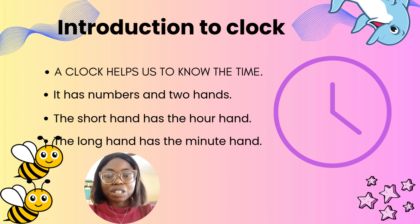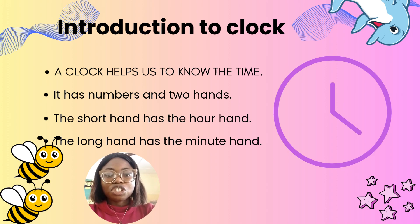A clock helps us to know the time. It has numbers and two hands. Look at the picture on your screen of the clock. There you see the short hand — the short hand is the hour hand, and the long hand is the minute hand.